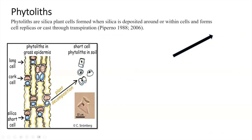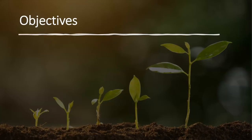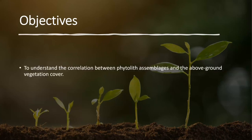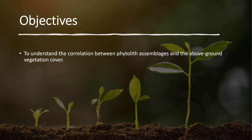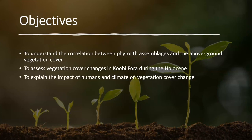Phytoliths form in the epidermal cells of a plant. When a plant dies or decays, the phytoliths separate and preserve in the soil for a long, long time. These are some of the plant species you find inside Bomas that you won't find outside Bomas. The objectives of this study were to understand the correlation between phytolith assemblages and above-ground vegetation cover, to assess vegetation cover changes in Kobifora during the Holocene, and to explain the impact of humans and climate on vegetation change.